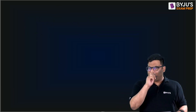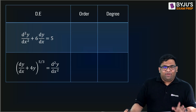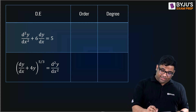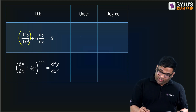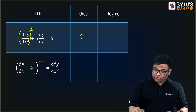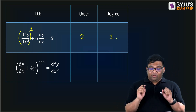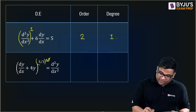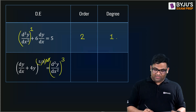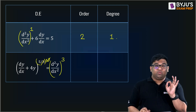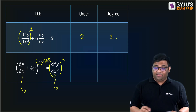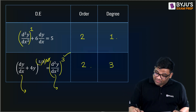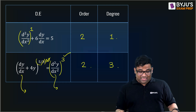Let us solve some more questions — I request you to pause the video and solve them first before seeing the solution. For the first question, the highest order is 2 and the power associated with that is 1, so order is 2 and degree is 1. For the second equation, there is a fraction 5/3, so I multiply by 3 and cube the result. The highest order is still 2, and the power associated is 3, so the degree is 3.